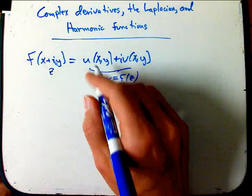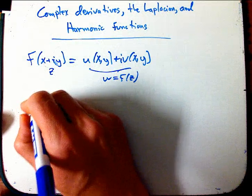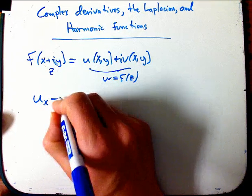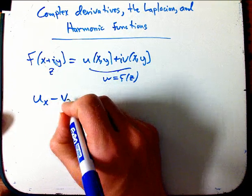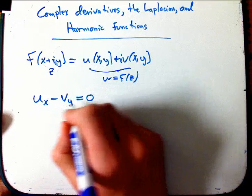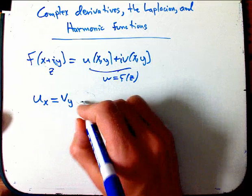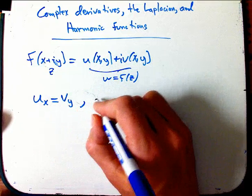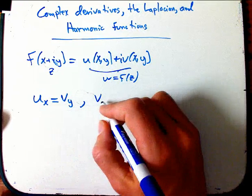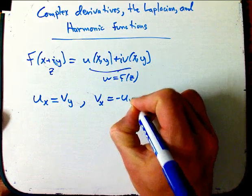So there's an interesting consequence we have from the Cauchy-Riemann equations. Let me write them down again using a tidier notation for partial derivatives. So ux and vy are the same — that's the partial derivative of u with respect to x. And vx is minus uy.